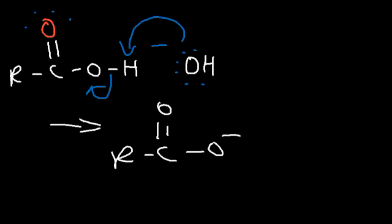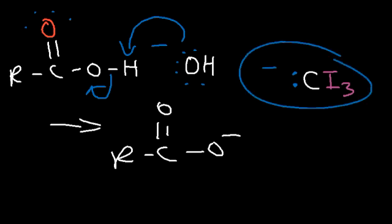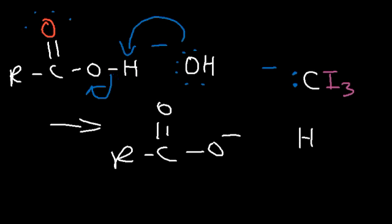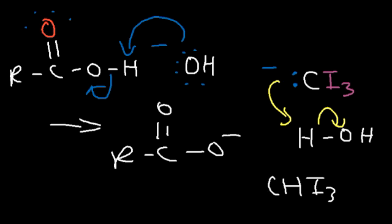What about the CI₃ group? When it was expelled, it has a negative charge. It can grab a hydrogen from water, and as it does so it turns into iodoform, which is CHI₃. This is a solid, so it's going to precipitate out. Once you see that yellow solid, you know you have a positive iodoform test, which means you had a methyl ketone in the solution.